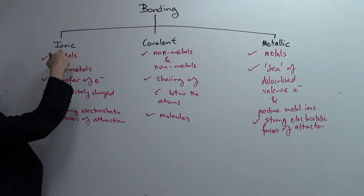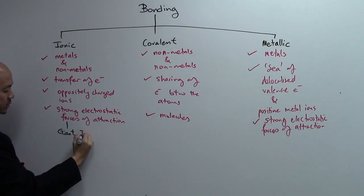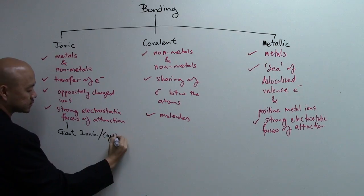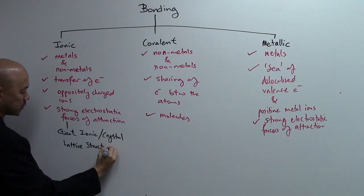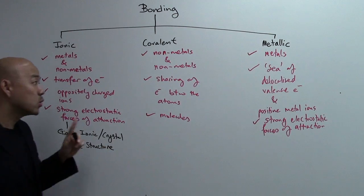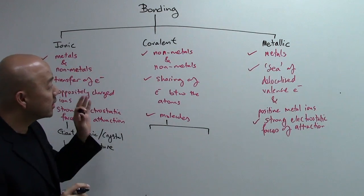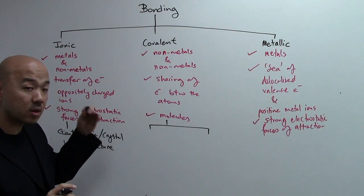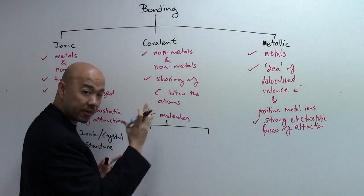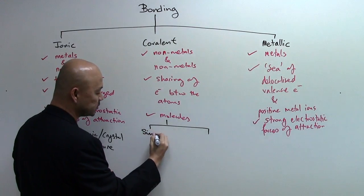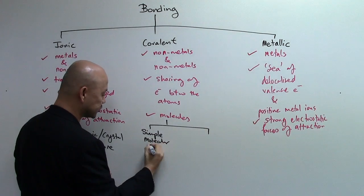Ionic compound will then have giant ionic, sometimes we call it crystal, lattice structure. Whereas the covalent compound, it all depends whether in terms of the covalent compound or the covalent molecules, whether they are small or they are big. If they are small, we tend to call it small covalent molecules or simple molecular structures.